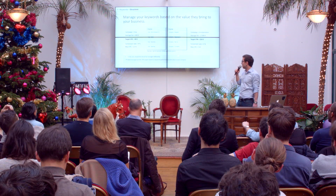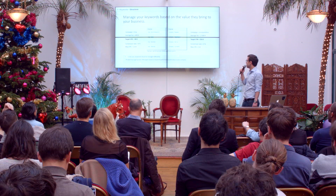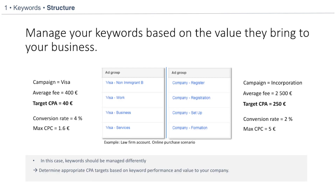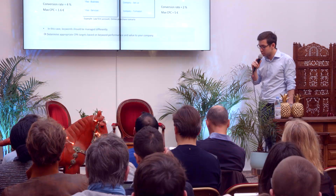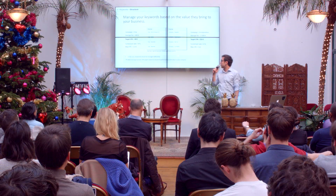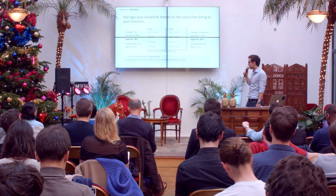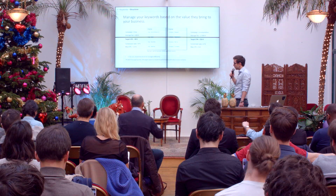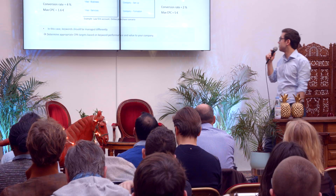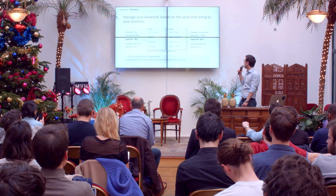In this example, I'm talking about a law firm located in Thailand — an old account I was managing. I have two campaigns: one where I sell visa services and another for company and corporation services. In the first one, the average fee of a typical visa is 400 euros. Taking 10% of that, we would target a cost per acquisition of 40 euros. With a conversion rate of 4%, that means I can go up to 1.6 euros per click.